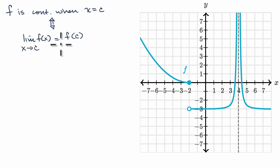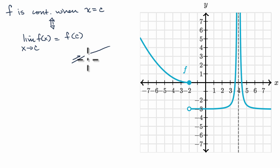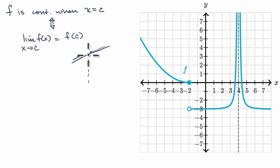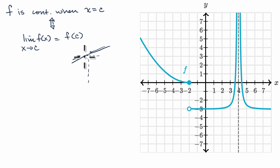Think about what's happening: the limit as x approaches c of f of x. If we approach from the left, we're getting to this value; if we're approaching from the right, we're getting this value. In order for the function to be continuous, if I had to draw this function without picking up my pen, the value of the function at that point should be the same as the limit. This is really just a more rigorous way of describing this notion of not having to pick up your pencil — this notion of connectedness — that you don't have any jumps or discontinuities of any kind.